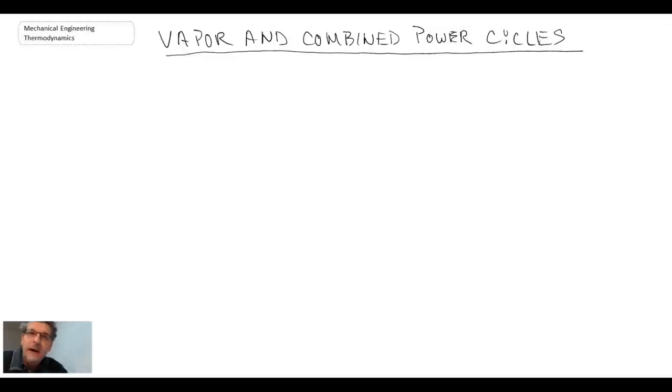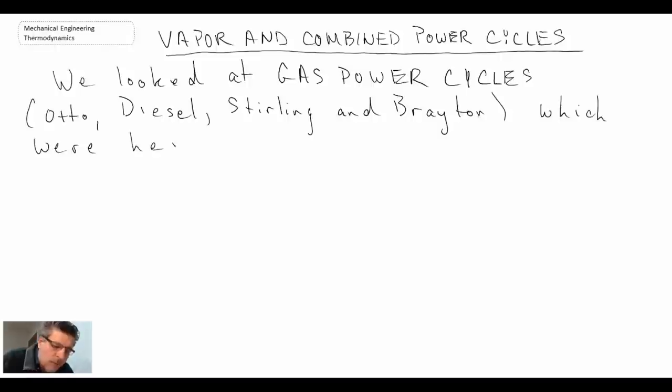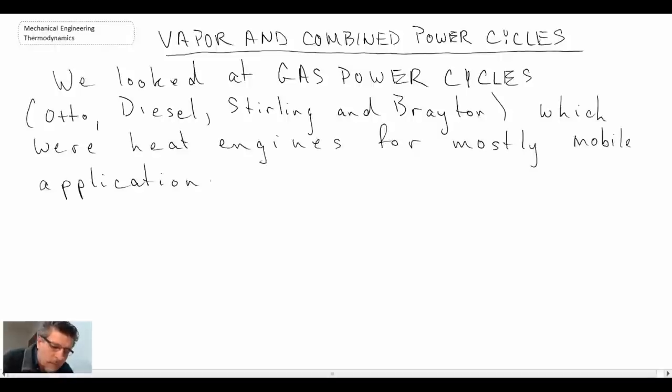Thus far what we've looked at in terms of power cycles, we looked at the gas power cycle and we considered a number of different ones. We looked at the Otto, the Diesel, the Stirling, and the Brayton. The thing that we found with the Otto, the Diesel, Stirling perhaps to a lesser extent, and the Brayton—